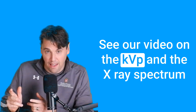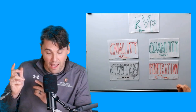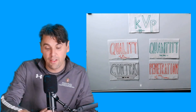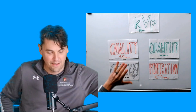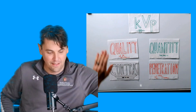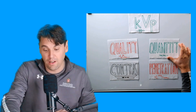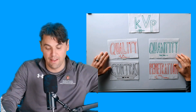See our video on the KVP and the x-ray spectrum. The quantity also changes with the KVP. Both the shape of the x-ray spectrum, which is the quality, and the actual number of x-rays, which is the quantity, are both changing as a function of KVP.